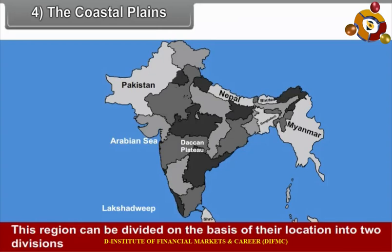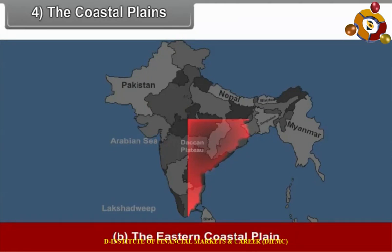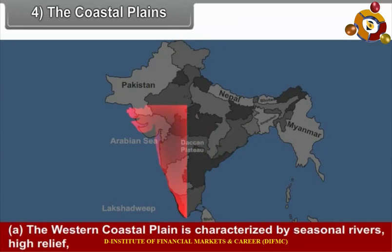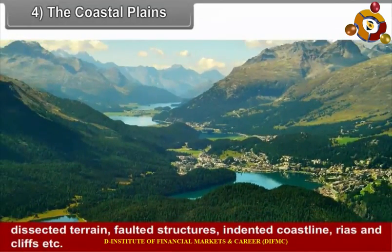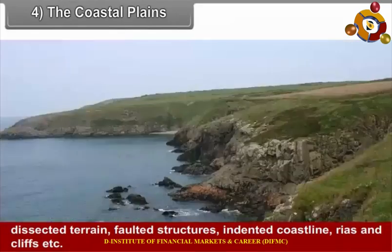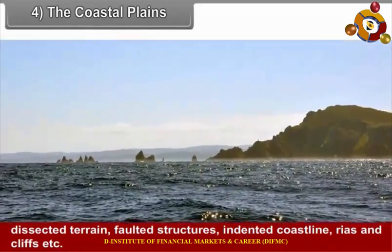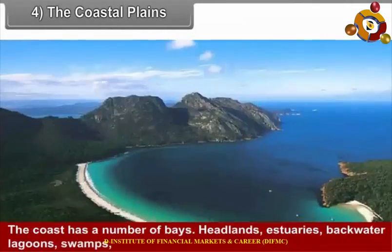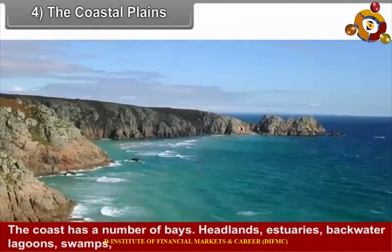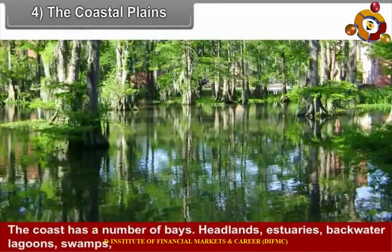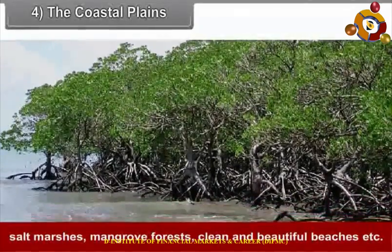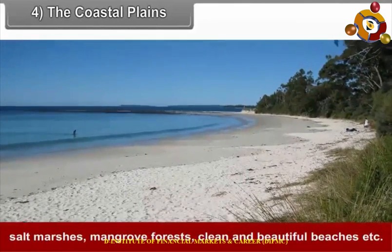The Coastal Plains can be divided into two divisions based on location: the Western Coastal Plain and the Eastern Coastal Plain. The Western Coastal Plain is characterized by seasonal rivers, high relief, dissected terrain, faulted structures, indented coastline, terraces, and cliffs. The coast has a number of bays, headlands, estuaries, backwater lagoons, swamps, salt marshes, mangrove forests, and clean and beautiful beaches.